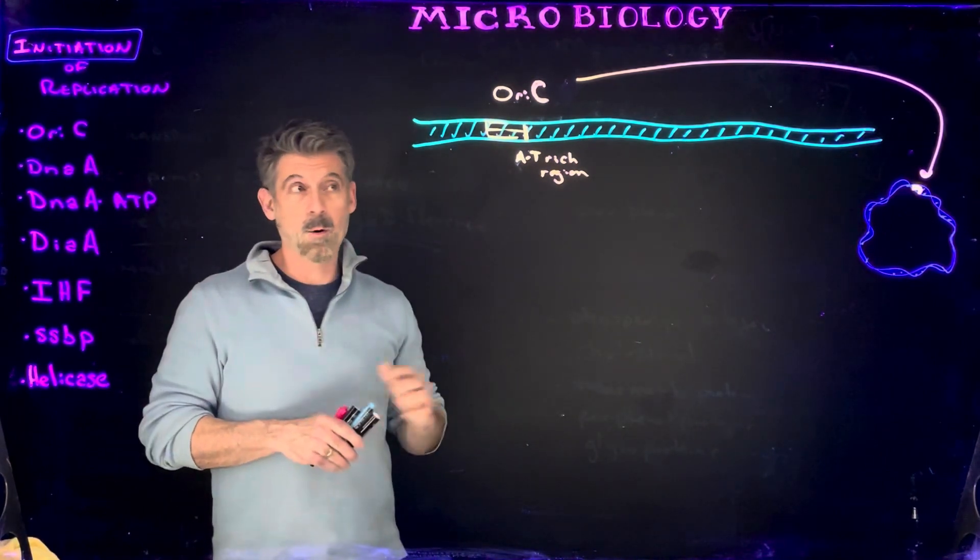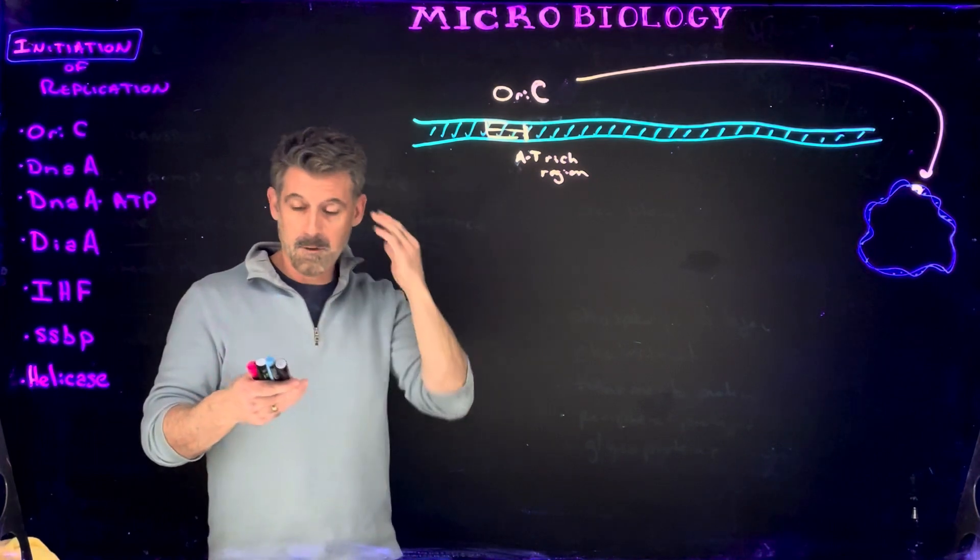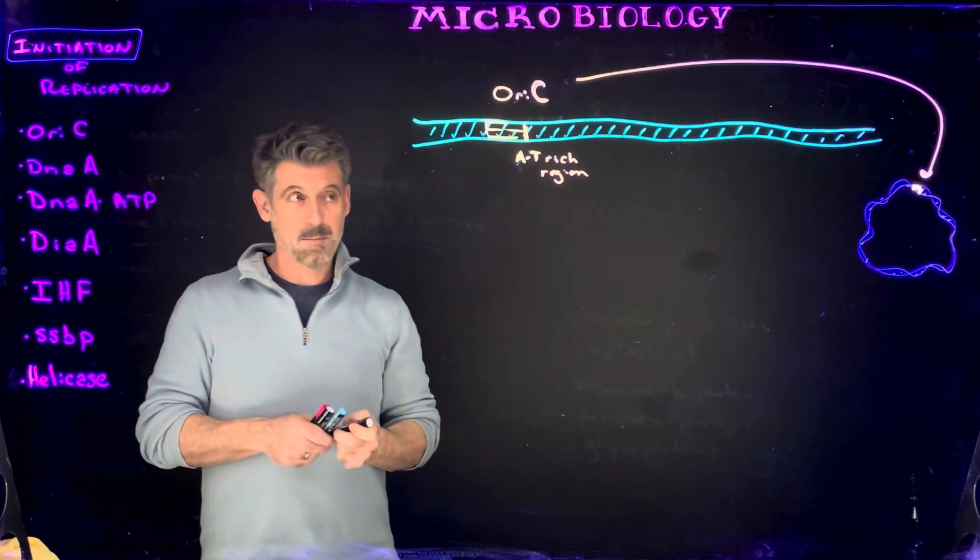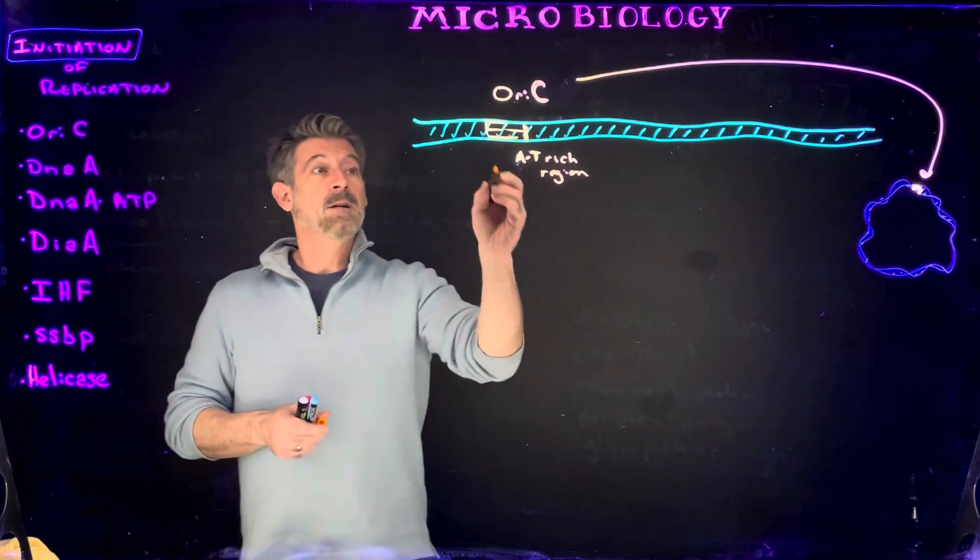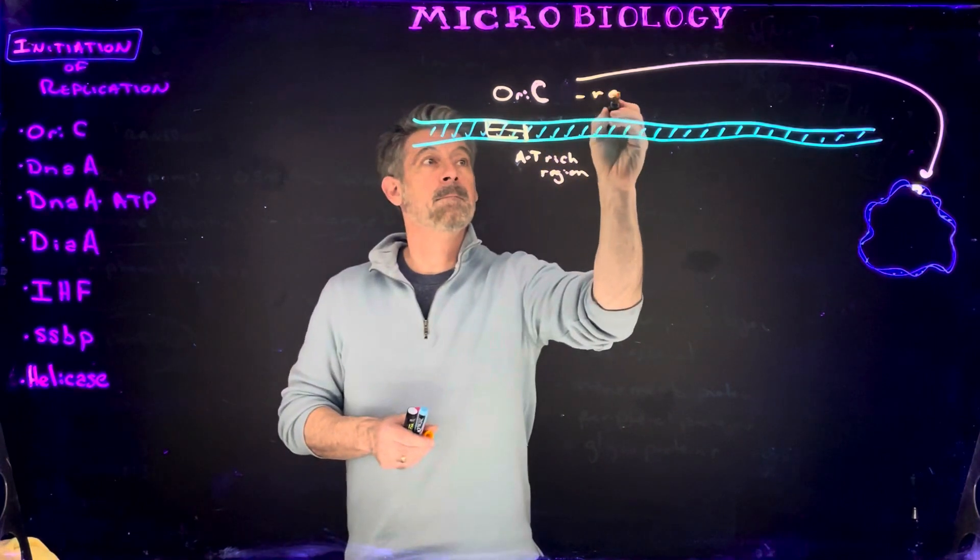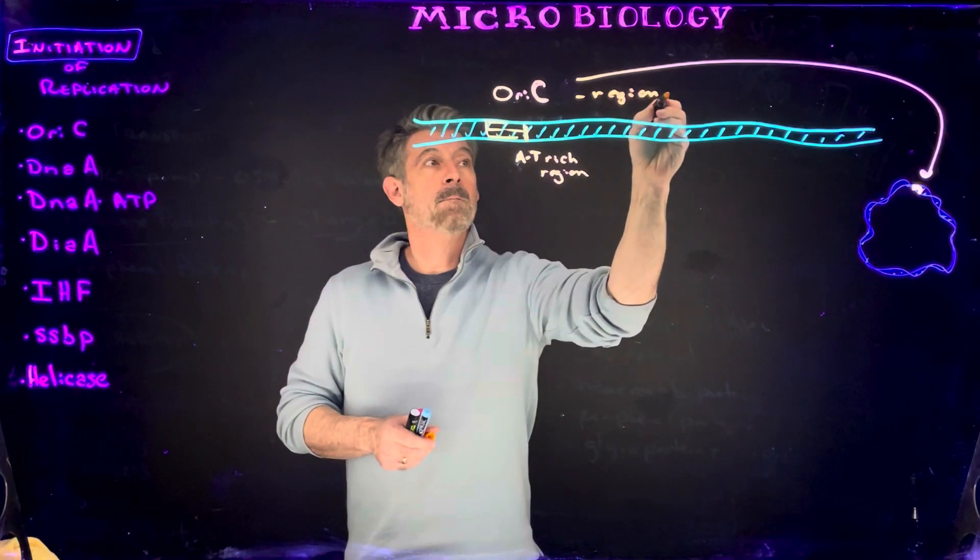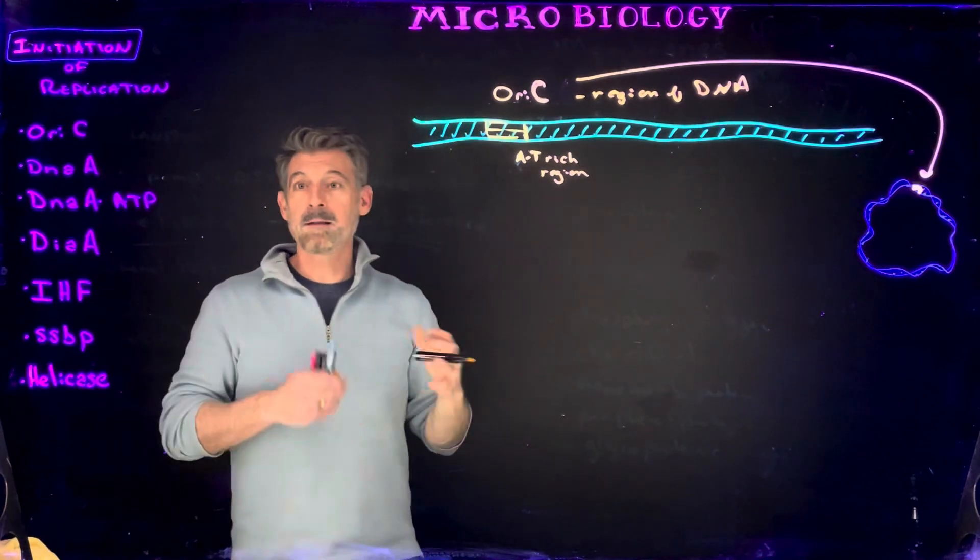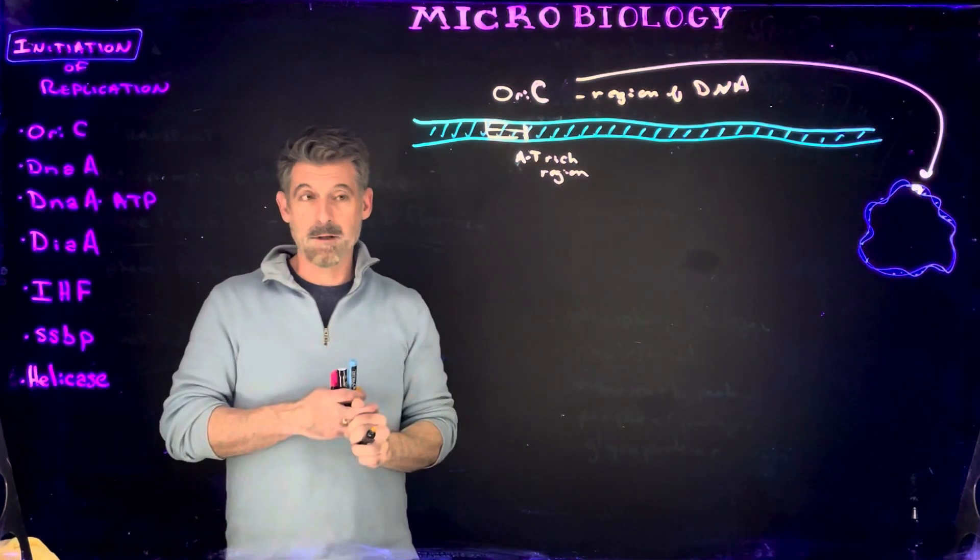Some species may have more than one origin, but we're going to use this as a model. There's one particular origin of replication in this particular model. So the oriC is a region of the DNA typically rich in adenines and thymines.